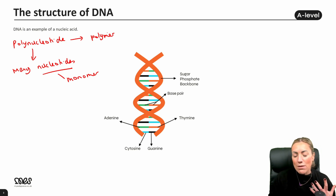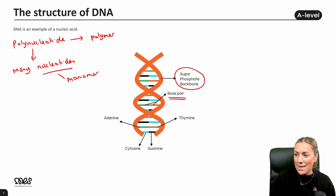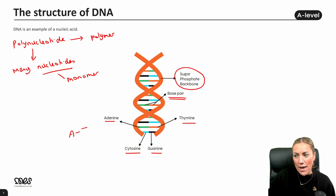From GCSE you might remember some things about DNA, like it has a double helix structure. We have the two sugar-phosphate backbones, which you can see in orange, and between them you've got your bases which form base pairs. At GCSE you got away with just saying A, T, G and C, but now we call them adenine, thymine, guanine, and cytosine. Adenine always pairs with thymine and guanine always pairs with cytosine — that is the complementary base pair rule.